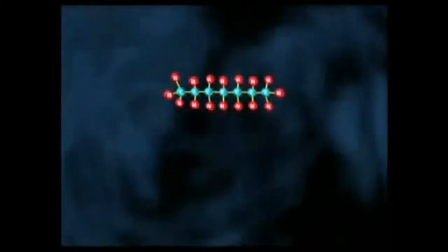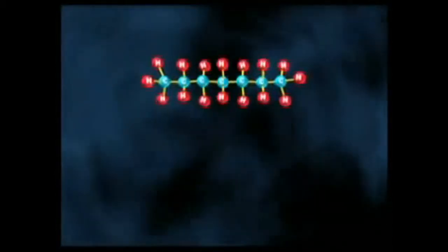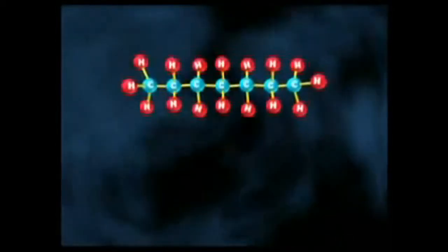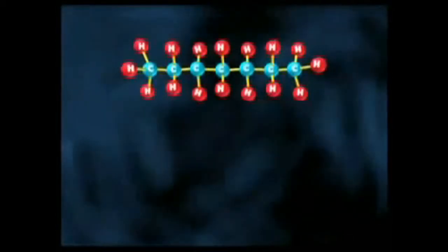Smaller hydrocarbons can also be treated to form longer carbon chain molecules in the refinery. This is done through the process of catalytic reforming.